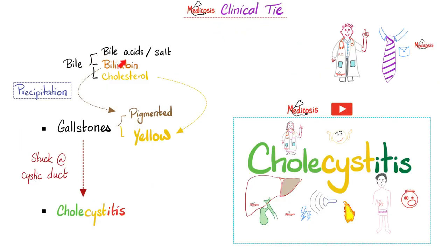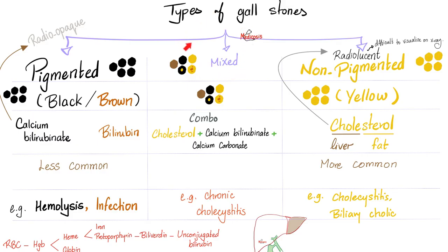Clinically: bile contains bile acids, bile salts, bilirubin, and cholesterol. The gallbladder stores and concentrates bile - too much concentration risks precipitation, especially with calcium, leading to gallstones inside the gallbladder. When you eat, CCK squeezes the gallbladder. If a stone gets stuck in the cystic duct while the bladder is contracting, there is obstruction and clogging. Stagnation invites bacteria, causing infection and inflammation - cholecystitis, a very painful condition. Check out my cholecystitis video for more detail including the types of gallstones.